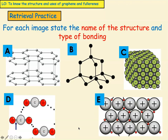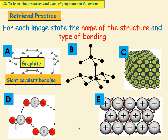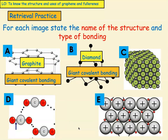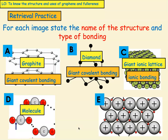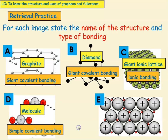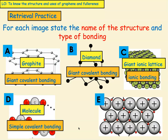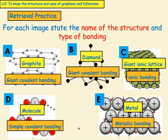Welcome back. Let's self-assess our work now. The first one is graphite, and that is giant covalent bonding. The second one is diamond, that also is giant covalent bonding. The third one is a giant ionic lattice, and that is ionic bonding. D is a molecule, so that is simple covalent bonding. E is a metal, and that is metallic bonding. Hopefully you've got those correct.